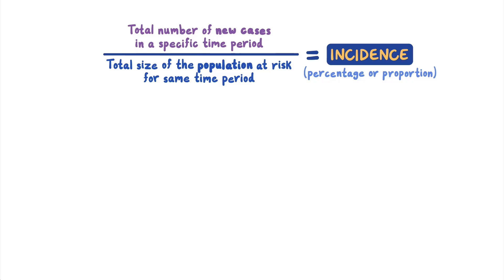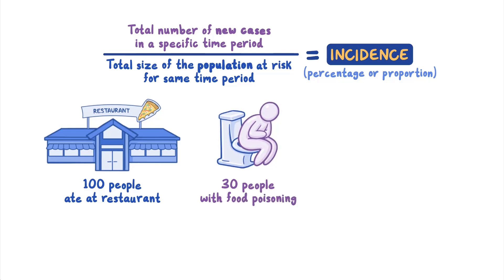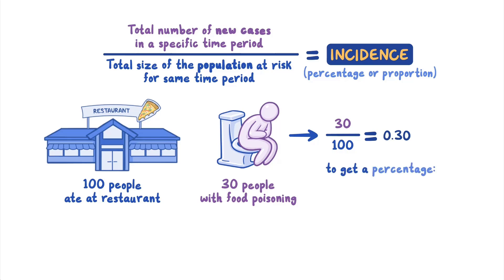For example, if 100 people ate at a local restaurant and 30 of them came down with salmonella food poisoning, public health experts could calculate the incidence, or risk of illness, as 30 divided by 100, which equals 0.30. To get a percentage, multiply 0.30 by 100, which equals 30%. So the incidence of salmonella food poisoning among people who ate at the restaurant is 30%.